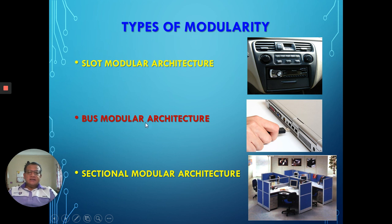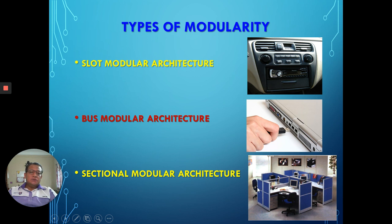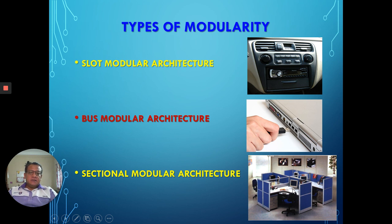The third type of modular architecture is sectional modular architecture. Sectional means one section of a complete product can be attached to another section to complete it as a whole. For example, office partitions — one partition for one employee, another for the next — four partitions of the same design and size can be attached together to make the whole partition set for employees. This is called sectional modular architecture.